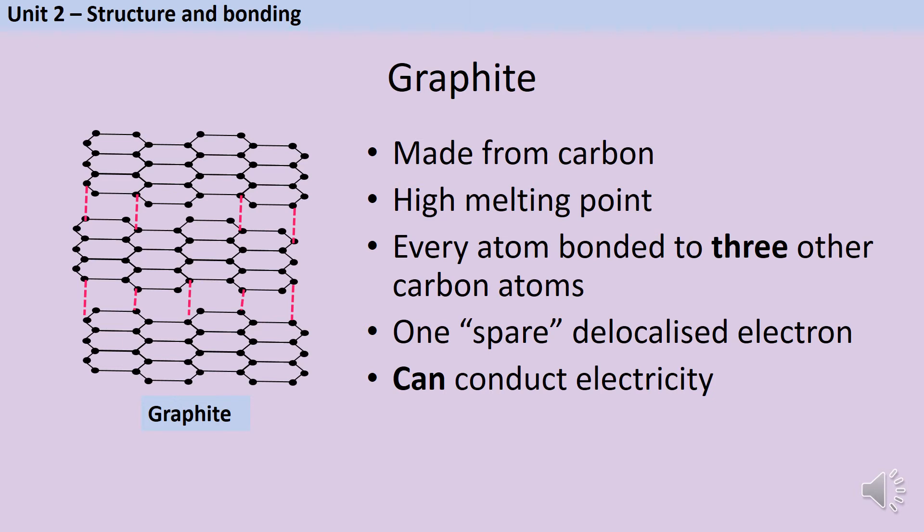Also, because there's only a weak force between the sheets, rather than strong covalent bonds, they're able to slide over each other, and this makes graphite soft and slippery. This makes it really useful for use as a lubricant.